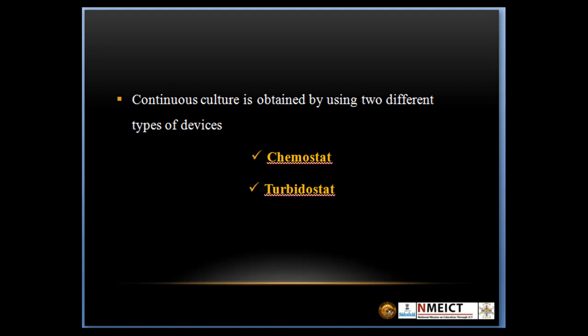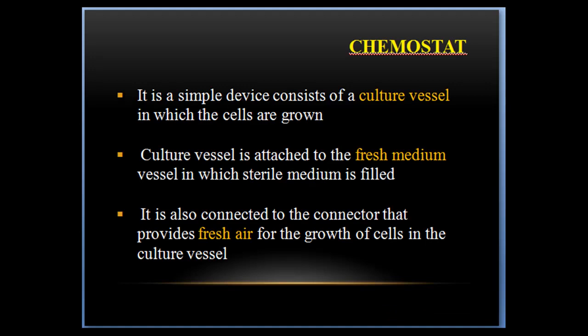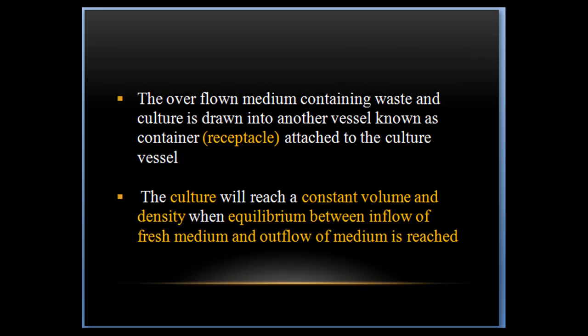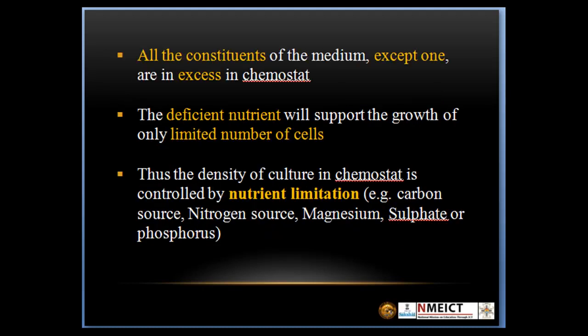Continuous culture is obtained by using two different types of devices: chemostat and turbidostat. The chemostat is a simple device consisting of a culture vessel in which cells are grown. The culture vessel is attached to a fresh medium vessel filled with sterile medium, and also connected to a connector that provides fresh air for the growth of cells. The overflow medium containing waste and culture is drawn into another vessel known as a container attached to the culture vessel. The culture reaches a constant volume and density when equilibrium between inflow of fresh medium and outflow of medium is reached.